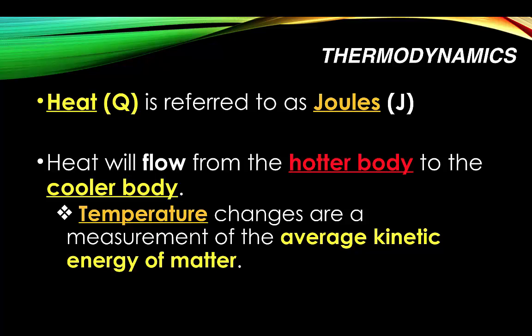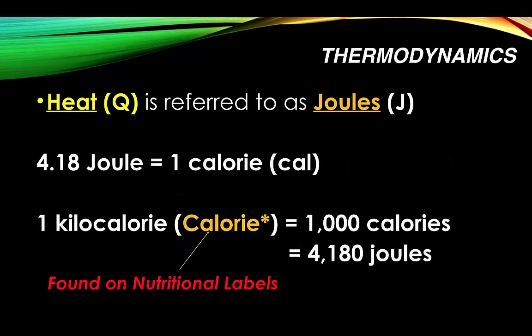Temperature changes are a measurement of the average kinetic energy of matter. Heat is measured in joules, but it can also be measured in calories. In the United States, we measure things in kilocalories, which is a capital C if you notice a difference. So 1,000 calories is equivalent to 4,180 joules. If you've ever been abroad, you'll notice that other countries use kilocalories or joules on their labeling.